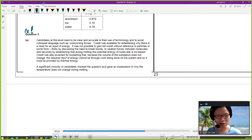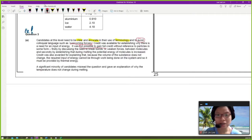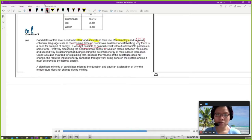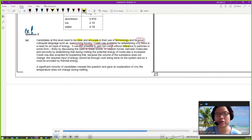So here is the examiner report. I like to show students when they talk about explanation. Candidates at this level, they shade you already at this level. You are at the final level before you enter uni. That's why I say candidates at this level need to be clear and accurate in their use of terminology. And avoid colloquial languages. So colloquial language means common language, such as overcoming forces. So credit was available for establishing why there is a need to have input of energy. Because that was the question. Why do we need energy although the temperature didn't change?